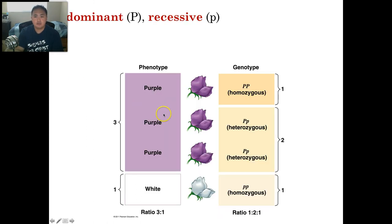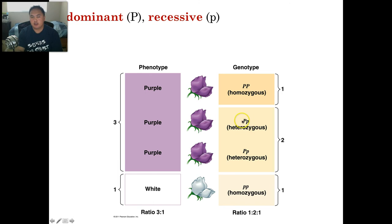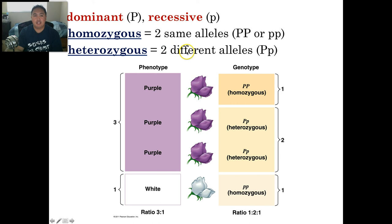Dominant uses capital letters and recessive uses lowercase. Purple flowers have capital P capital P, and white flowers have lowercase p lowercase p. Even though the F1 kids have a purple appearance, their genotype is capital P lowercase p — they have the gene for white but don't express it. If you crossbreed that generation, there's a one in four chance of getting lowercase p lowercase p, which explains Mendel's three to one ratio. That's the law of segregation. Phenotype is what's physically expressed; genotype is the genetic makeup. Homozygous means both alleles are the same; heterozygous means they're different.